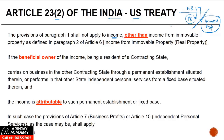Income which otherwise might have been taxable under Article 23(1) — except immovable property income — is excluded if the beneficial owner of that income is a resident of the contracting state, say the US, and carries on business in the other contracting state through a PE situated therein, or performs independent personal services from a fixed base situated therein.